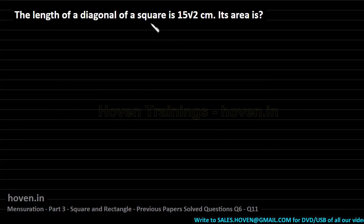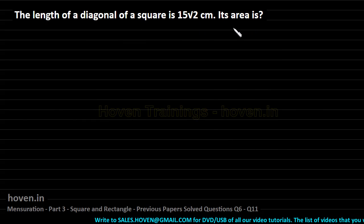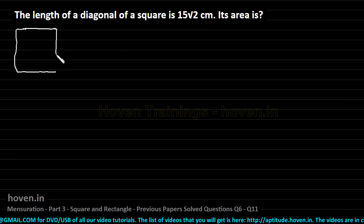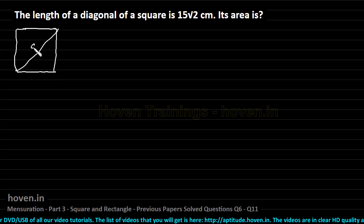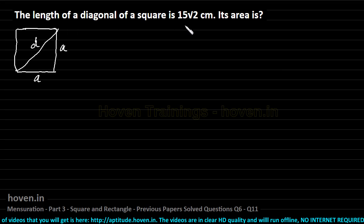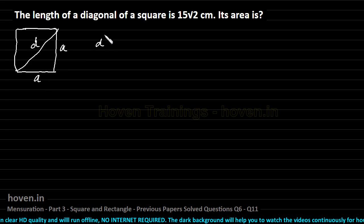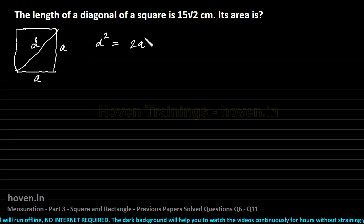The length of a diagonal of a square is 15√2 cm. Its area is what? This question has been taken from previous year SSE exams and is a pretty simple question. This is a square with diagonal D and side A. By Pythagoras theorem, we can see that D squared should be equal to A squared plus A squared. So we can write D squared is equal to 2A squared — a relation between the diagonal and the side of a square.